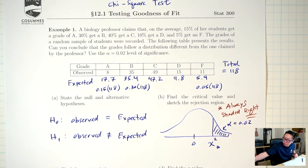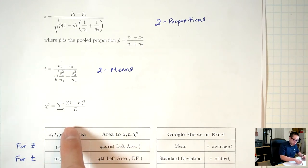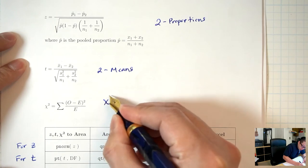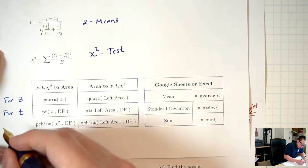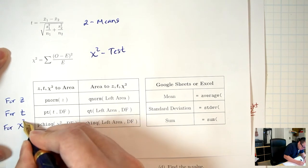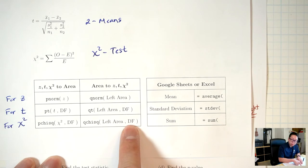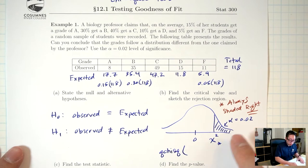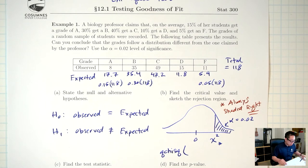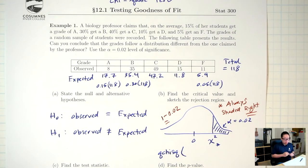Going back to our formulas, this last row is for the chi-square test. For part B, we're going to do area-to-chi-square using q-chi-square(left area, df). The left area: 0.02 is the shaded area to the right, so I need the other side — 1 minus 0.02 = 0.98.